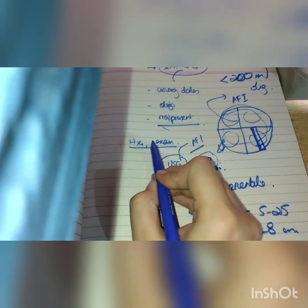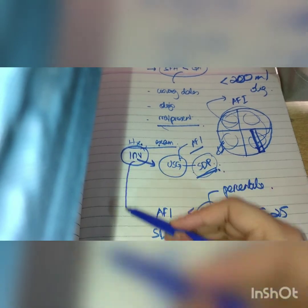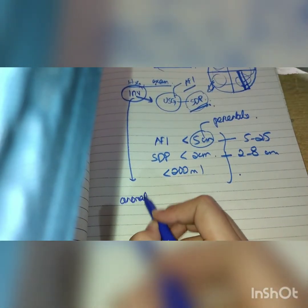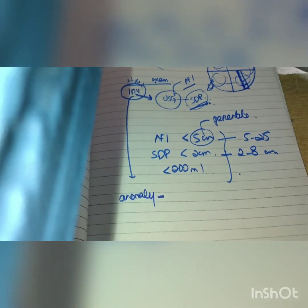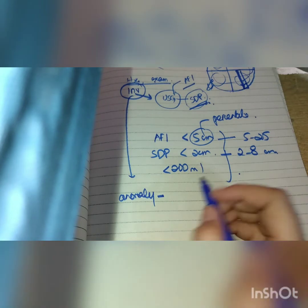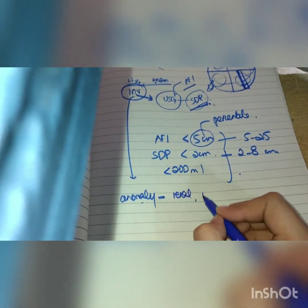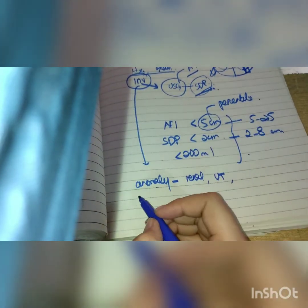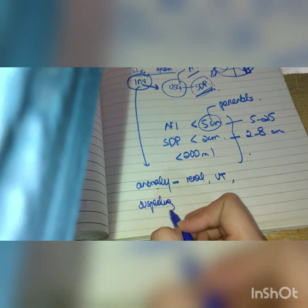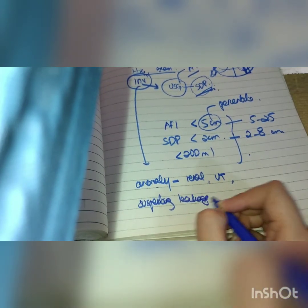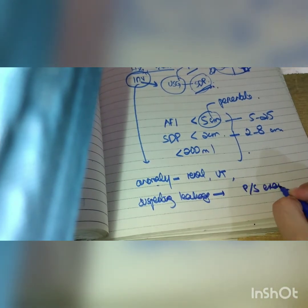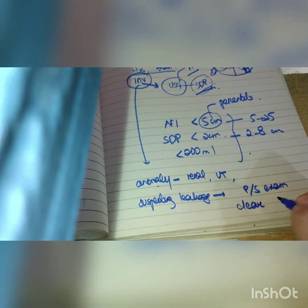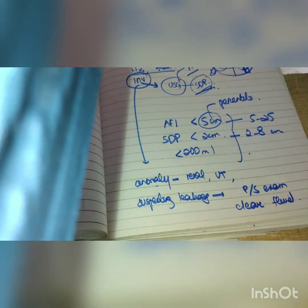So we have discussed history, examination, and investigation. Ultrasound is done to confirm oligohydramnios and also to look for fetal anomalies — both fetal and maternal causes exist. In history we ask about drugs and fluid leakage. On ultrasound, renal anomalies or urinary tract anomalies may be visible. If leakage is suspected, we perform a per speculum examination and look for clear fluid in the posterior blade of the speculum.